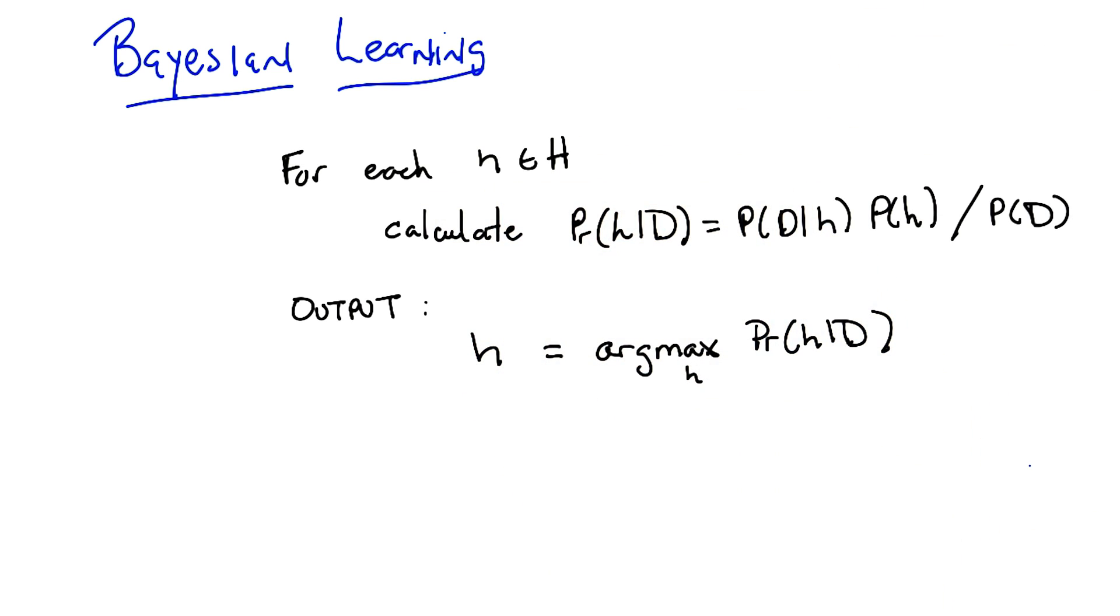All right, so here's the algorithm, Michael. So it's very simple. For each h in H, that is each candidate hypothesis in our hypothesis space, simply calculate the probability of that hypothesis given the data, which we know is equal to the probability of the data given that hypothesis times the prior probability of the hypothesis divided by the probability of the data, and then simply output whichever hypothesis has maximal probability.